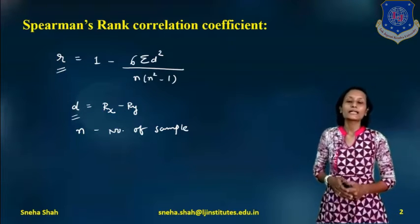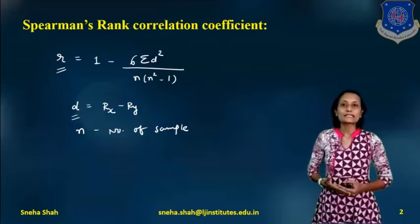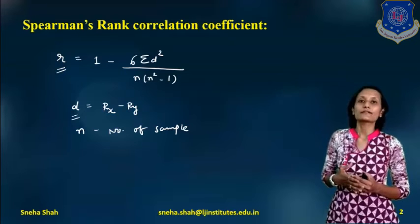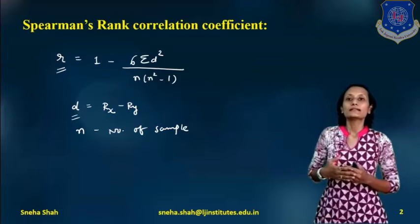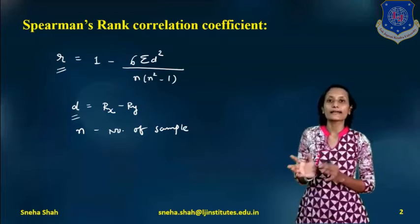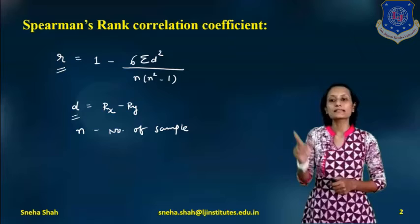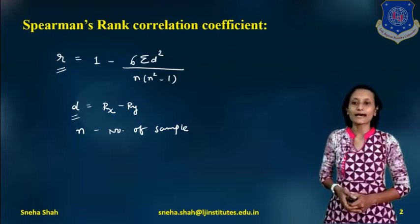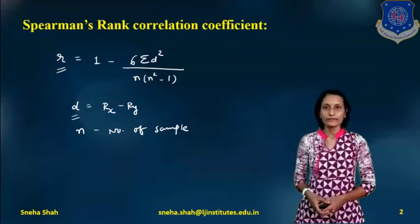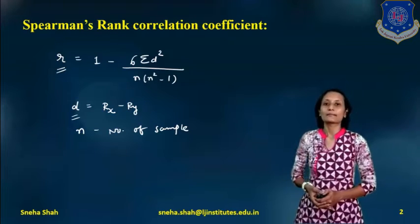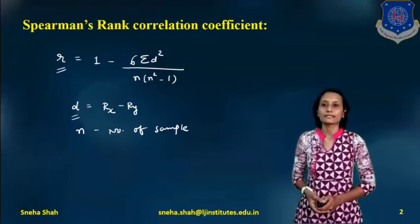Now, what is the value of D? D means it will be denoted as d_i. It means it will be the difference of ranks of x and y — D equals to Rx minus Ry. And the value of n represents the number of observations.